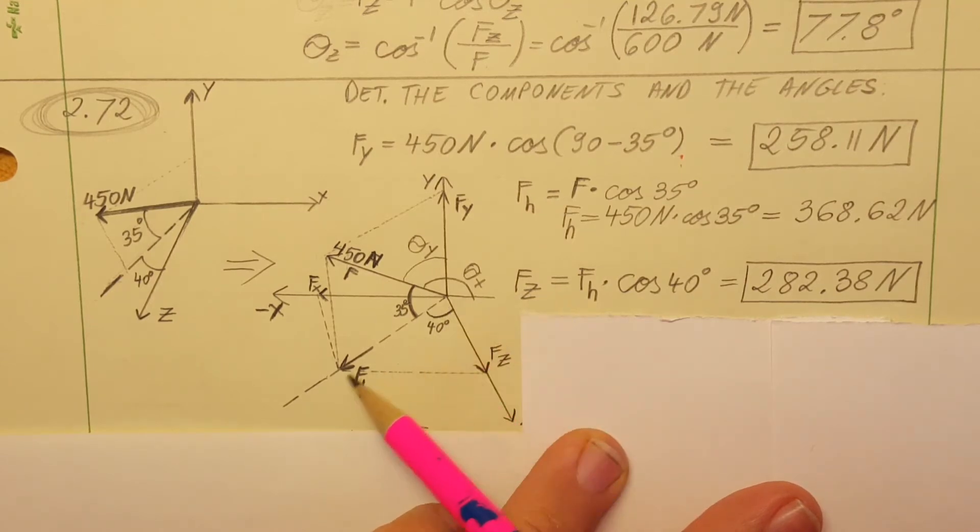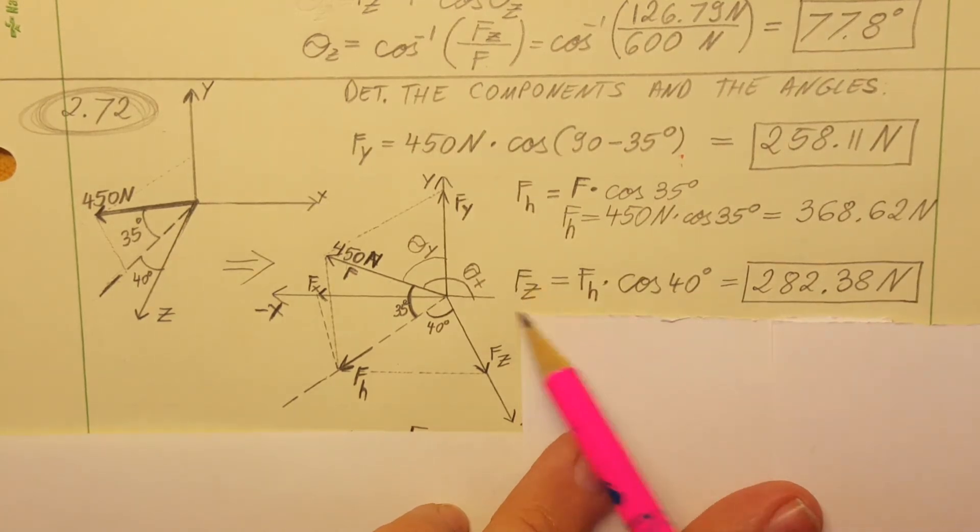Now I'm gonna use this triangle right here to find F of Z, the component FZ. We know the angle is 40, it was given, so therefore FZ equals FH, the one we calculated right here, times the cosine 40. This gives us 282. There you go we found our second component.